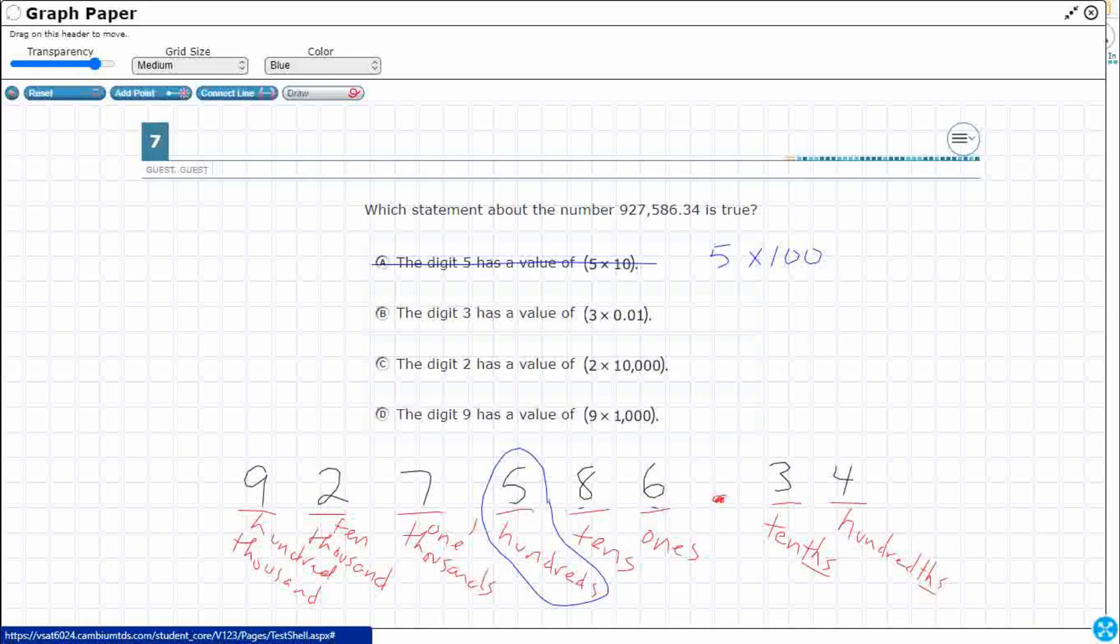The digit three has a value of three times one hundredth. Okay. That's a tricky one, because it is a decimal. Take a look at my three. But we're going to write this three times, and let me show you what I was talking about. Whenever you have a decimal, you always want to put a zero point.